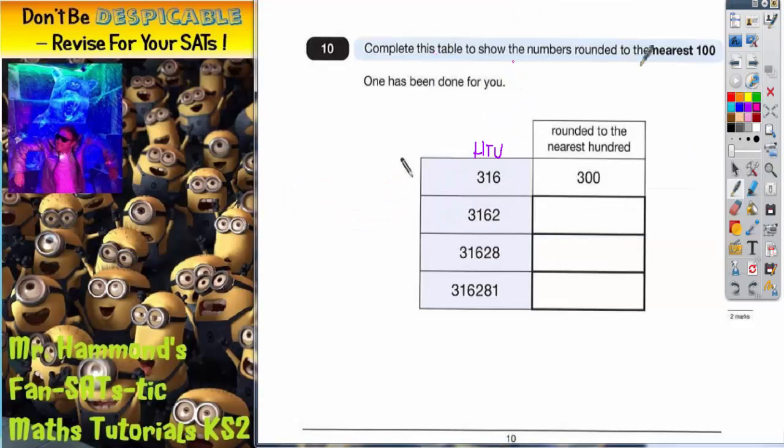Question 10 says complete this table to show the numbers rounded to the nearest hundred. So I've got numbers in this column and I have to round them to the nearest hundred.